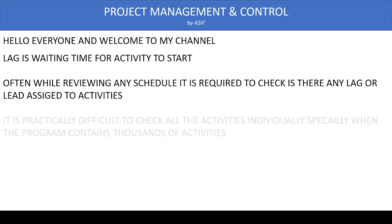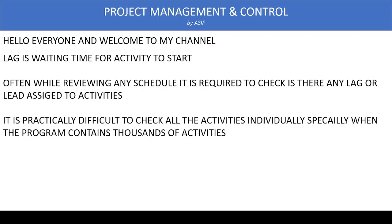It is very difficult to determine which activities are assigned with lag or lead times just by reviewing the program. In big or complex projects with hundreds or thousands of activities, it is not feasible and very time consuming to check each activity individually. There is also the possibility of human error — you might miss an activity assigned with lag.